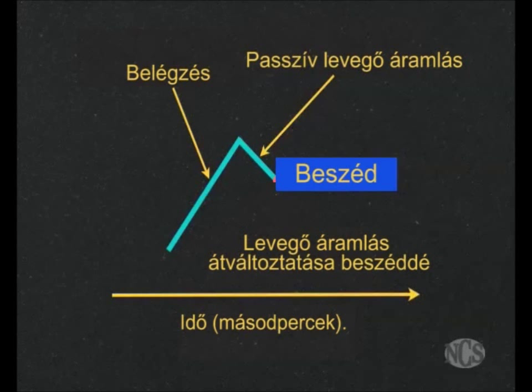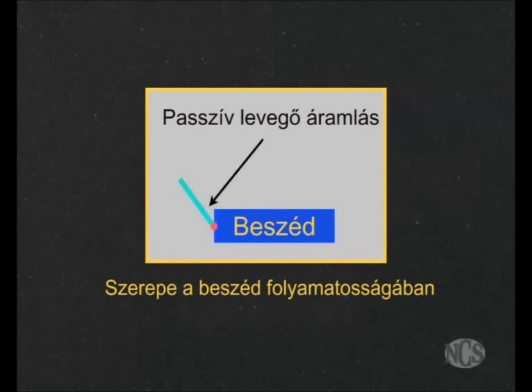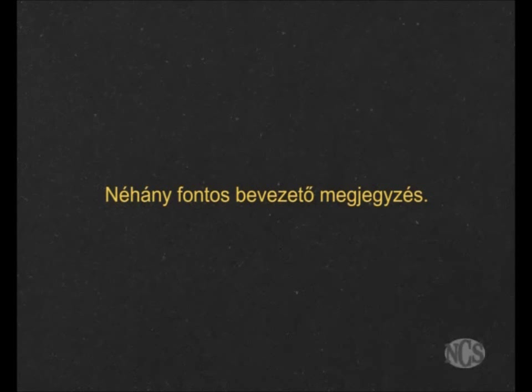Most people don't do that, but that's going to be a requirement. That air that is coming out is going to be a passive outflow of air. The red dot indicates that that airflow is going to transition smoothly into speech. Let's look at this passive outflow of air and study its role in fluency. There are three important concepts I want to bring to your attention with respect to that passive outflow of air.